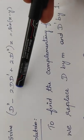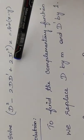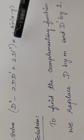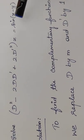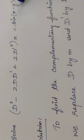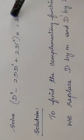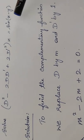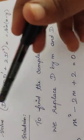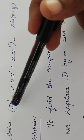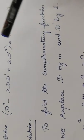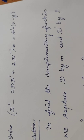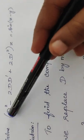Let us get into the problem: solve D² − 2DD' + 2D'² of z equal to sin(x − y). First we need to observe how to find the solution of this particular PDE. Wherever the existence of D and D' comes in, we call it a PDE. So how does D stand? It stands for a partial derivative operator.